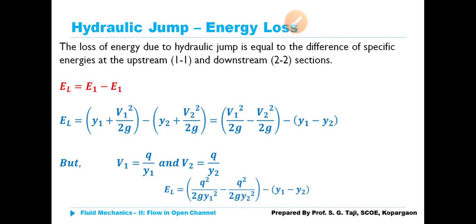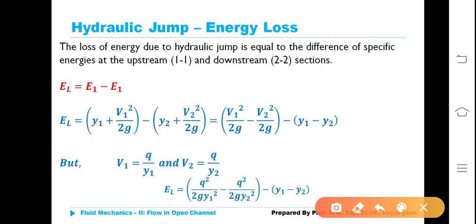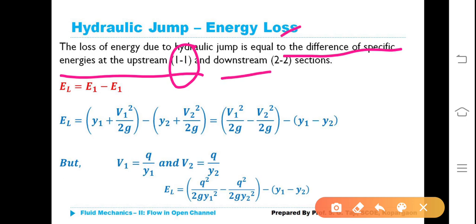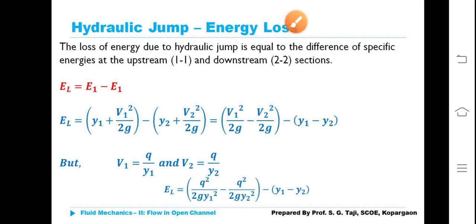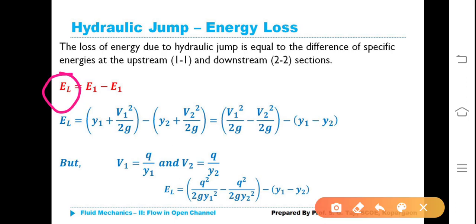We stopped at the expression for hydraulic jump and introduced energy loss. The loss of energy due to hydraulic jump is equal to the difference of specific energies at the upstream, that is section 1-1, and downstream, that is section 2-2. That's why it is represented as EL — energy loss. EL is equal to E1 minus E2.